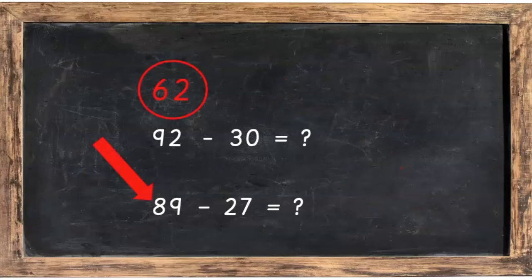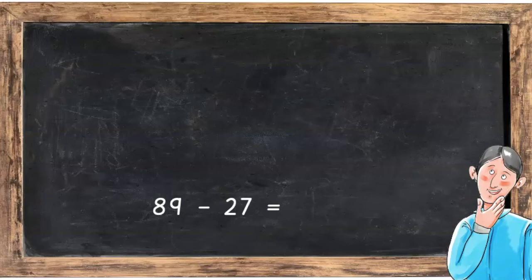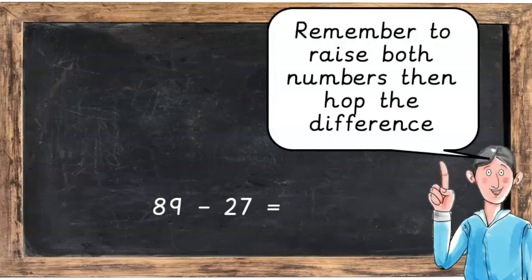So back now to our original sum, 89 take away 27. Now this sum will have the same difference because it's pretty much the same sum. So 89 take away 27. What does it equal? Remember to raise both numbers then hop the difference.